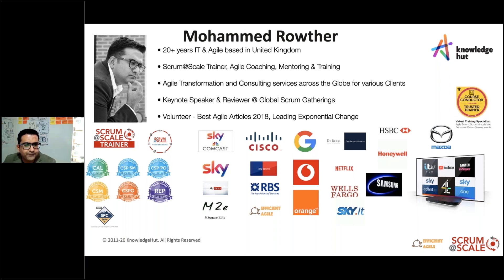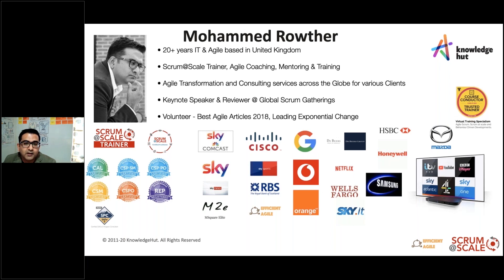I've done a few short keynotes at Scrum gatherings and done voluntary work for Scrum Alliance reviewing articles. I've been working on a book for the Best Agile Articles 2018, published in 2019. I also recommend the book 'Leading Exponential Change' — it talks about leadership and how change can happen. I am a Certified Agile Leader, I work with leadership teams in transformation, and I'm also working towards the SPC. I work with various frameworks like Nexus, Scrum at Scale, and SAFe.